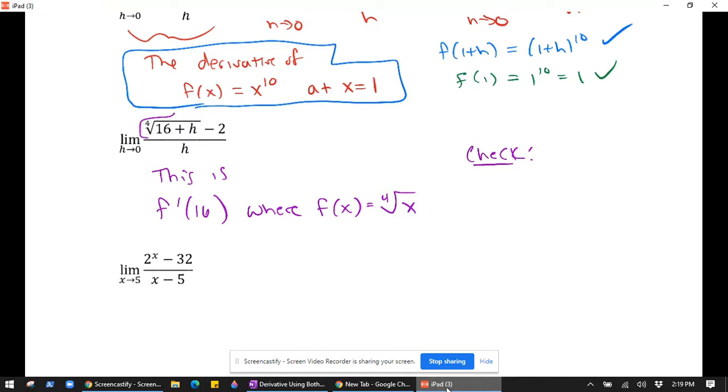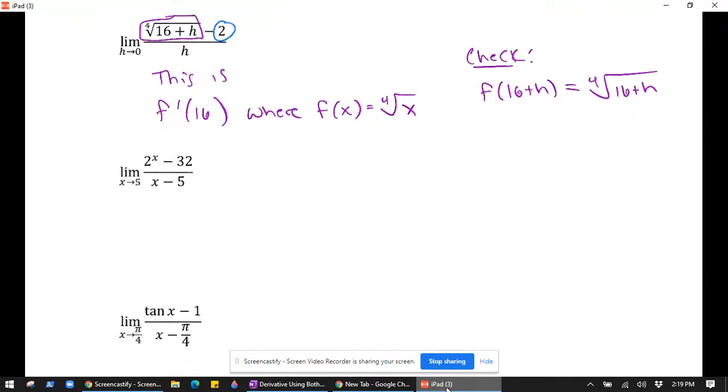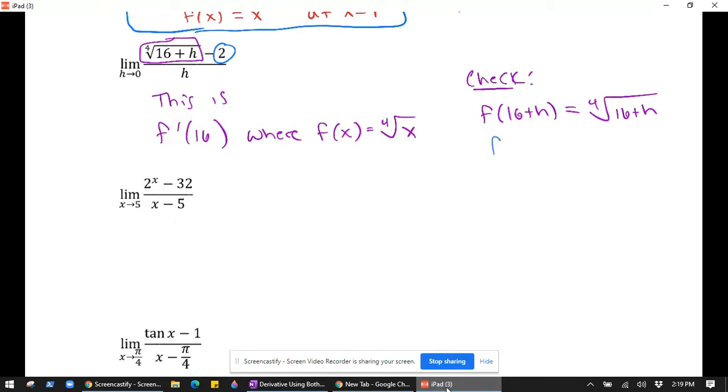So this here is supposed to be f of a plus h. So f of 16 plus h, given that our function is the fourth root of x, that's our claim. That would be 4th root of 16 plus h. That's what we see there. And this is supposed to be f of 16, right? Because it's f of a, and a is 16. That's what we're claiming. So f of 16 is the fourth root of 16, which is 2. So that worked as well.